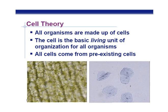We started off the year with cell theory and cell types. The three parts of cell theory are: all organisms are made of cells; the cell is the basic living unit of organization for all organisms; and all cells come from pre-existing cells. This is based on observations, and using inductive reasoning we've tied different observations together to form theories — that's how theories are formed, by observations and experimentation.